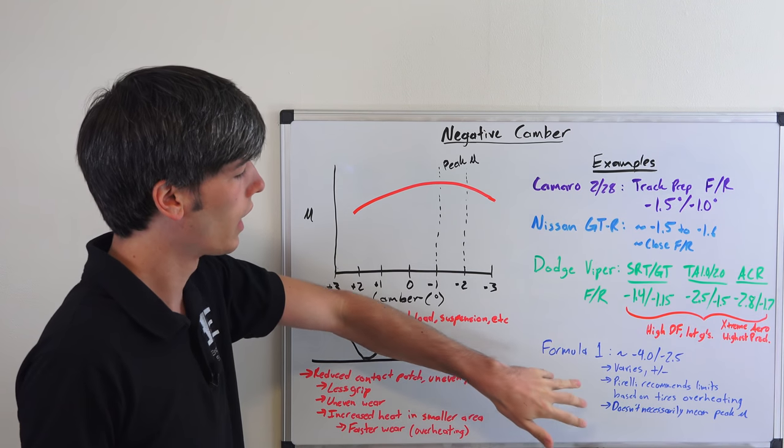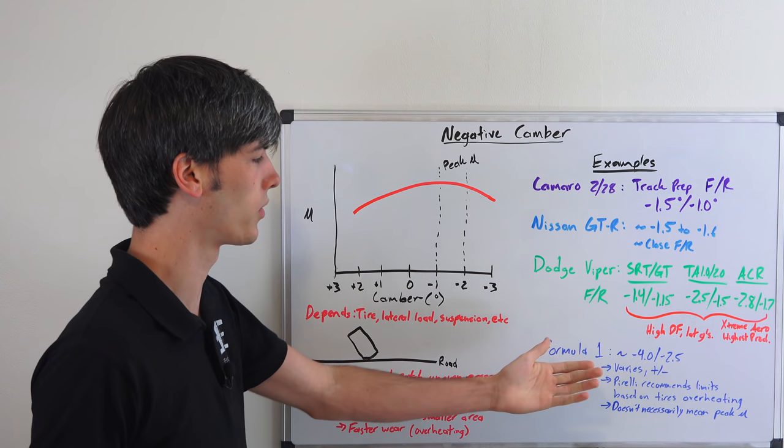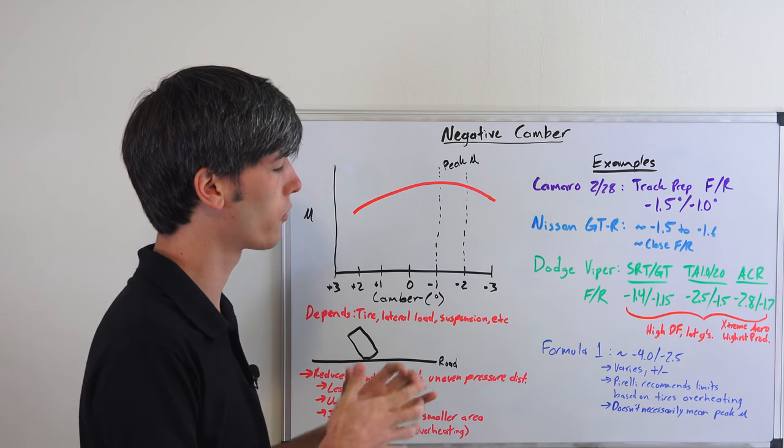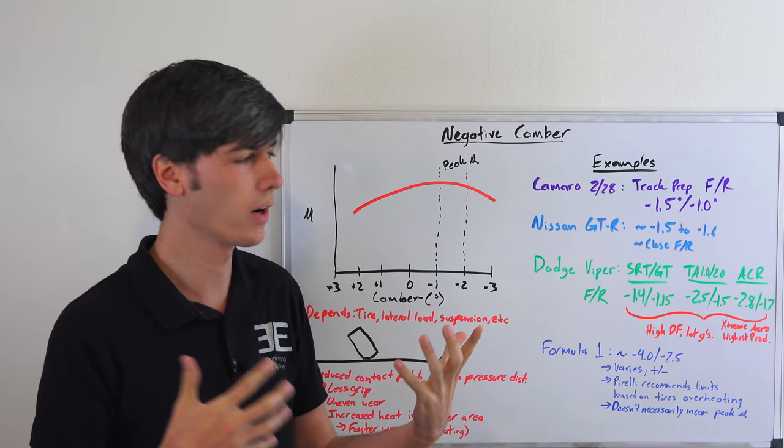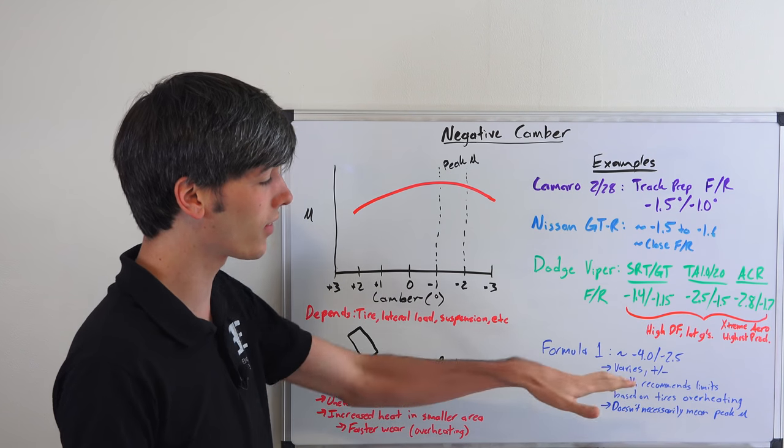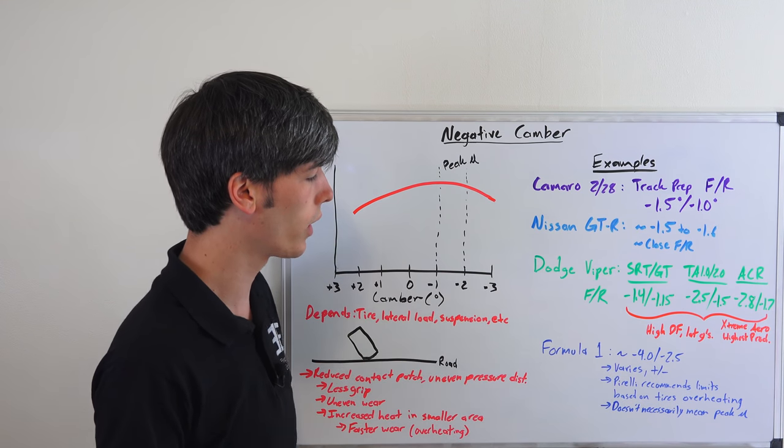Just one example from racing: in Formula 1, I was looking at what Pirelli recommended to the teams, and it seemed to be about negative 4 for the front and about negative 2.5 for the back. This of course varies from track to track and it can be less, it can be a little bit more. It doesn't necessarily mean that that's the peak coefficient of friction. It'll probably be somewhere close to it.